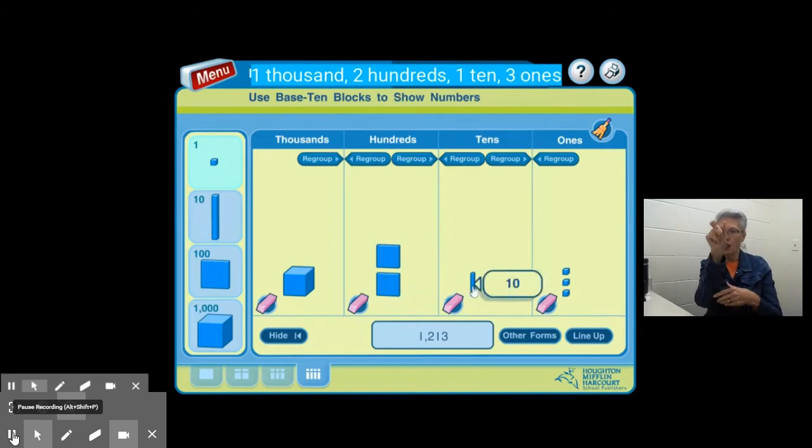I have one long, which is equal to 10, and I have three small cubes. Each one of them has a value of 1, so I have a total of three ones. So in standard form, we have 1,213.